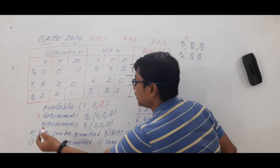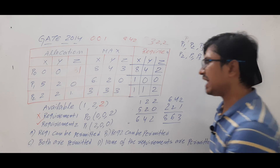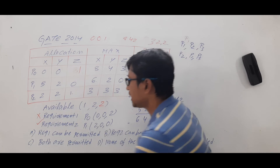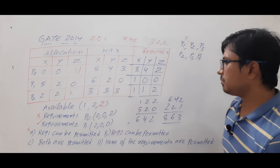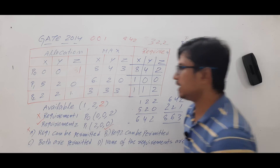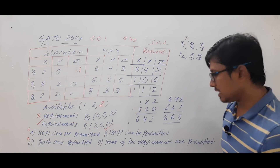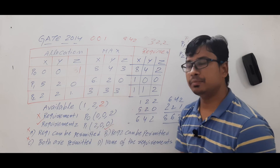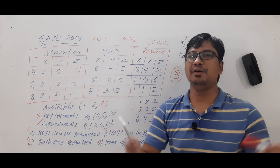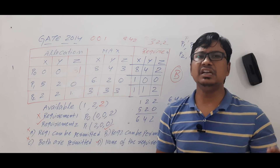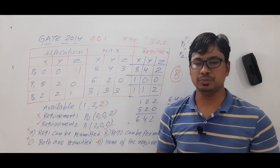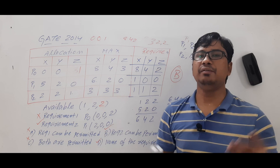We can permit Requirement 2, but not Requirement 1 since it leads to an unsafe state. Option A says Requirement 1 can be permitted — incorrect. Option B says only Requirement 2 can be permitted — correct. Option C says both are permitted — incorrect. Option D says none — incorrect. The correct answer is option B. I hope you understood how to solve this question. Feel free to ask in the comments if you have any doubts. Thank you for watching — have a nice day.